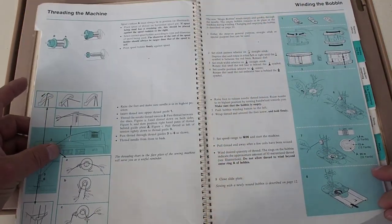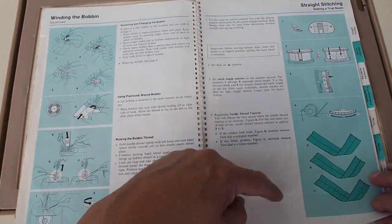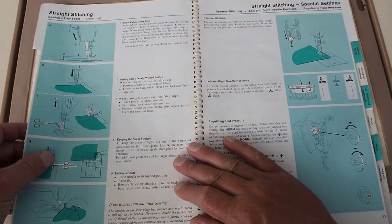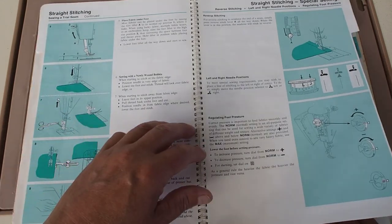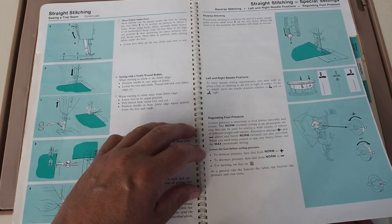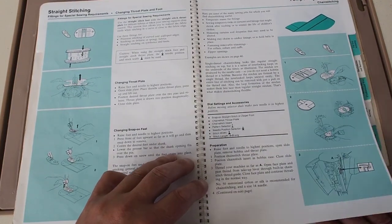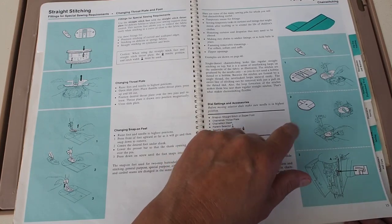Then obviously threading and winding bobbin, and then just off to the basics of straight stitching. A little bit of tension instruction there, straight stitching, special settings, setting the presser foot, and temporary stitching. Chain stitching - that's a really handy feature I use quite a bit.